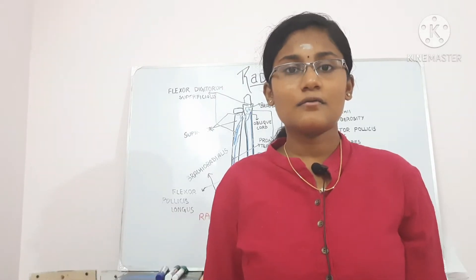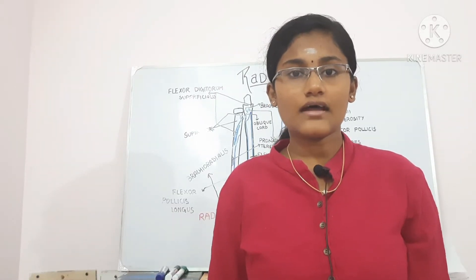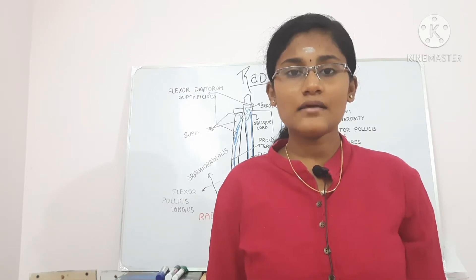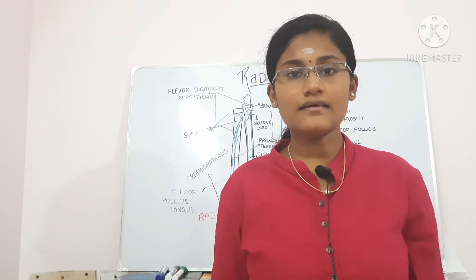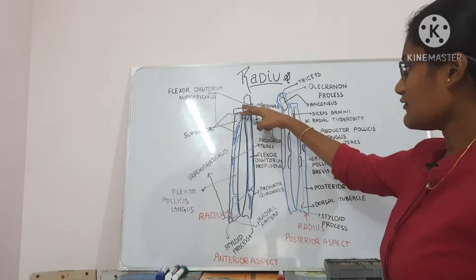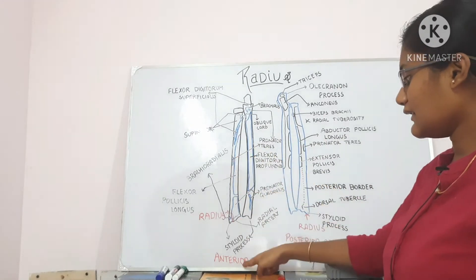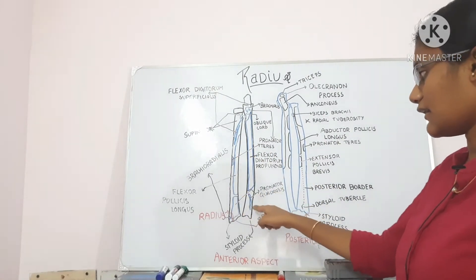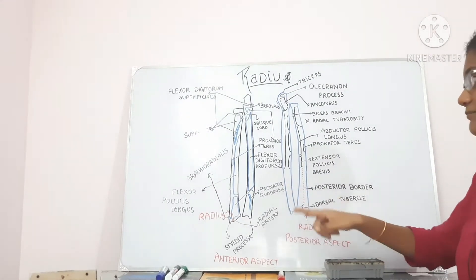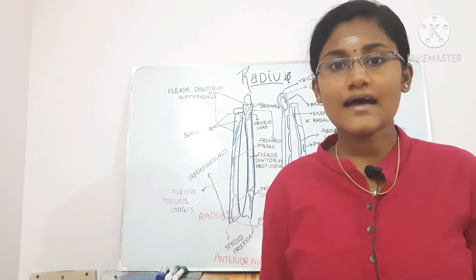Hello friends, welcome to my channel. This is Abhirami and I'm here to teach you today's topic: the radius. The radius has three main things: the upper end, shaft, and lower end. This part is the anterior aspect of the radius and ulna, and this part is the posterior aspect of the radius and ulna.